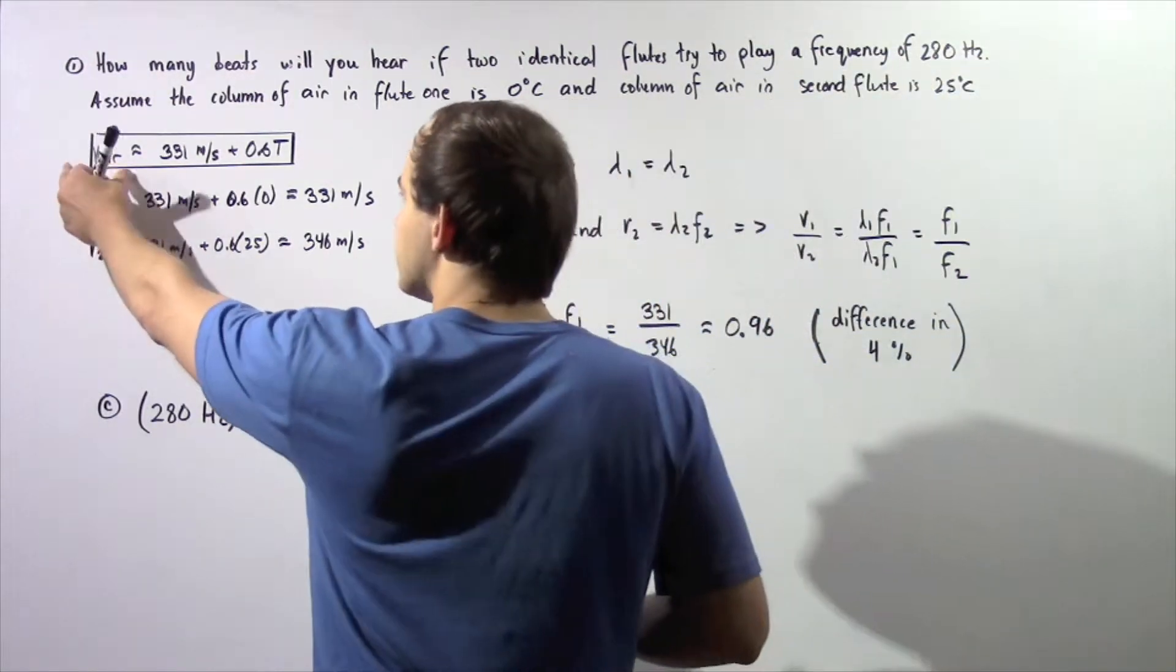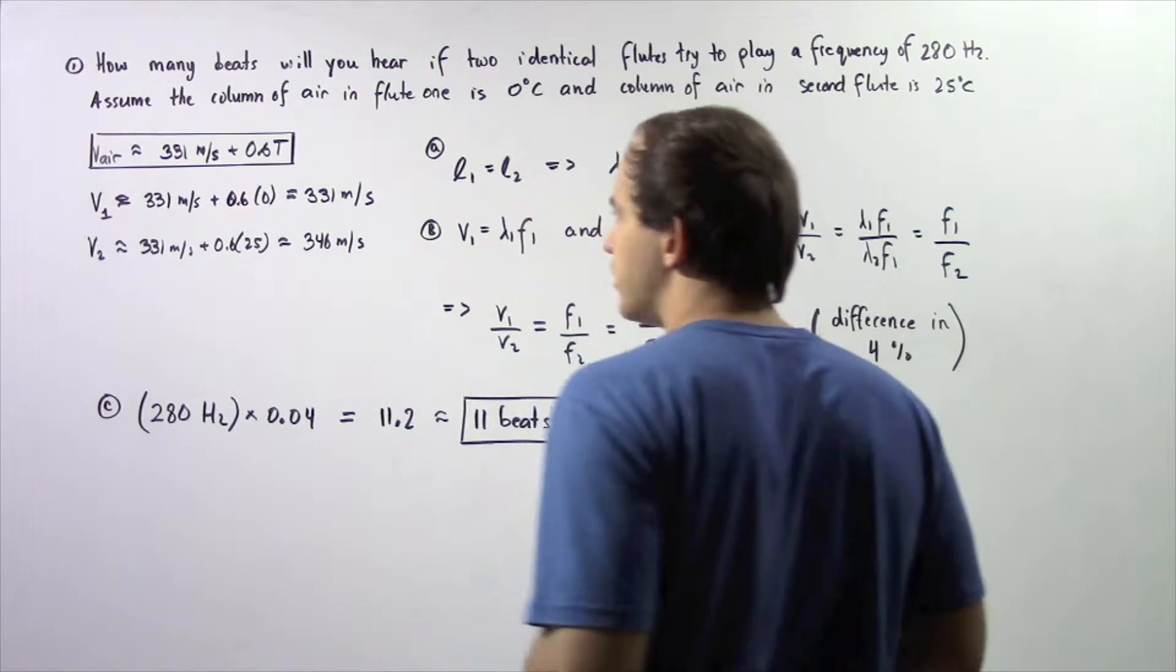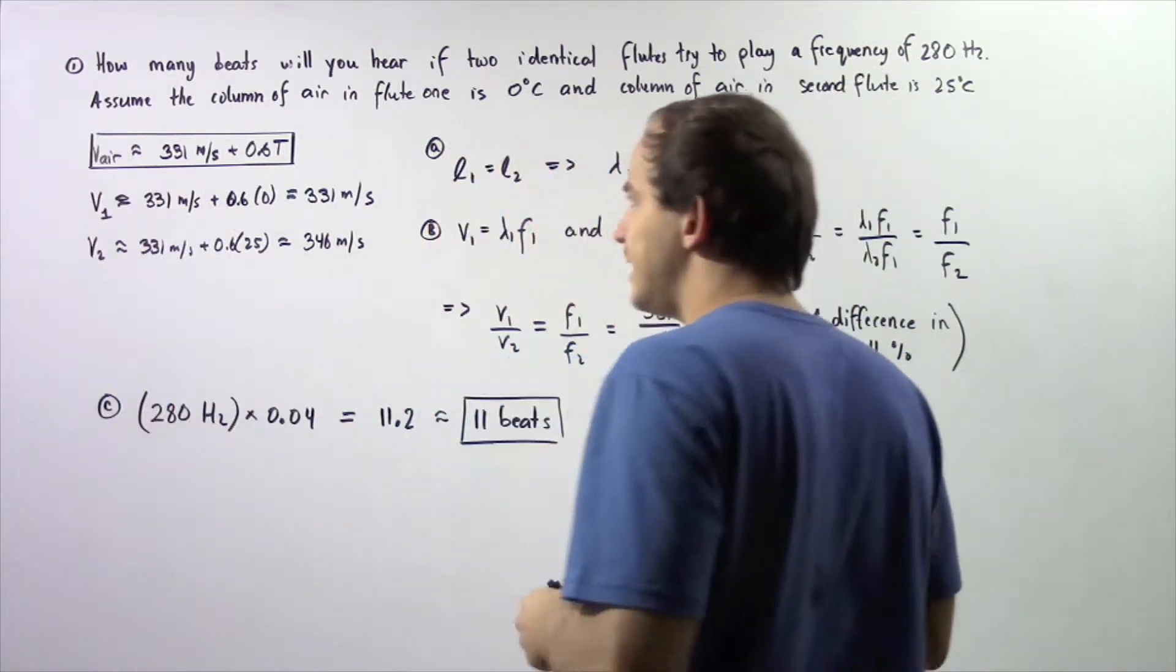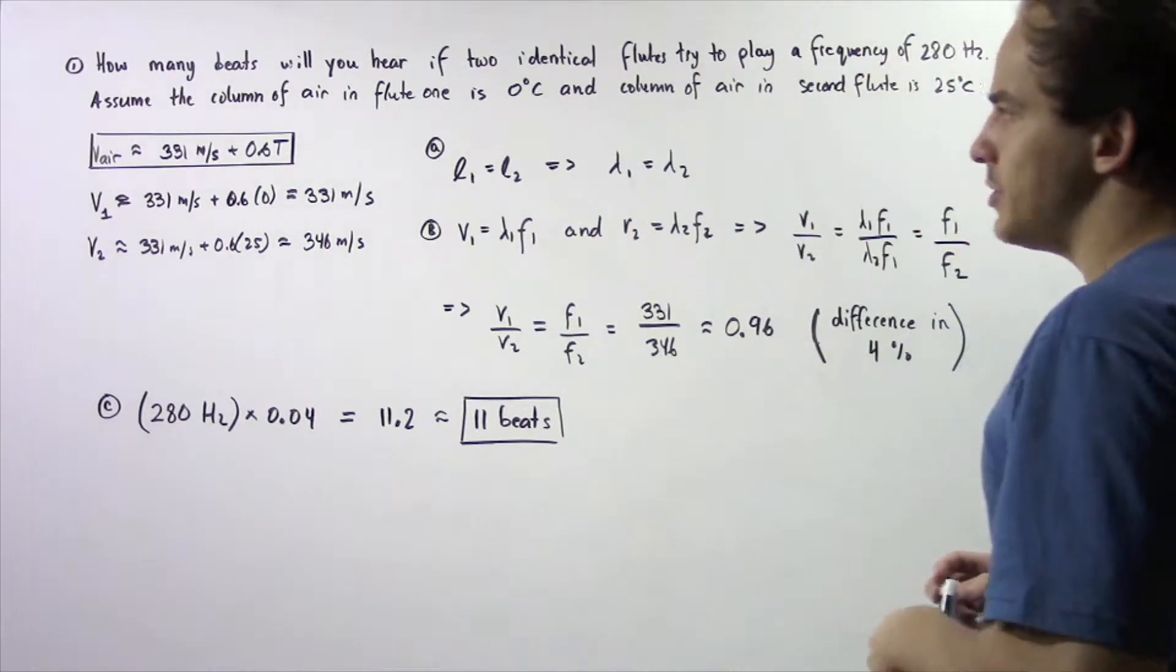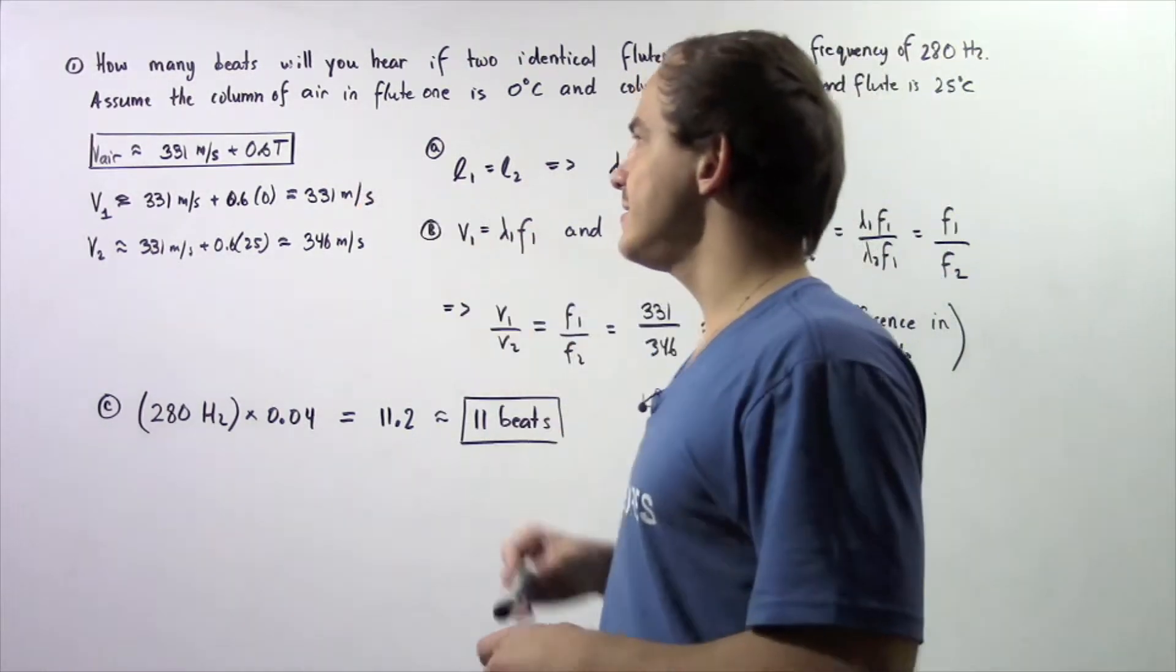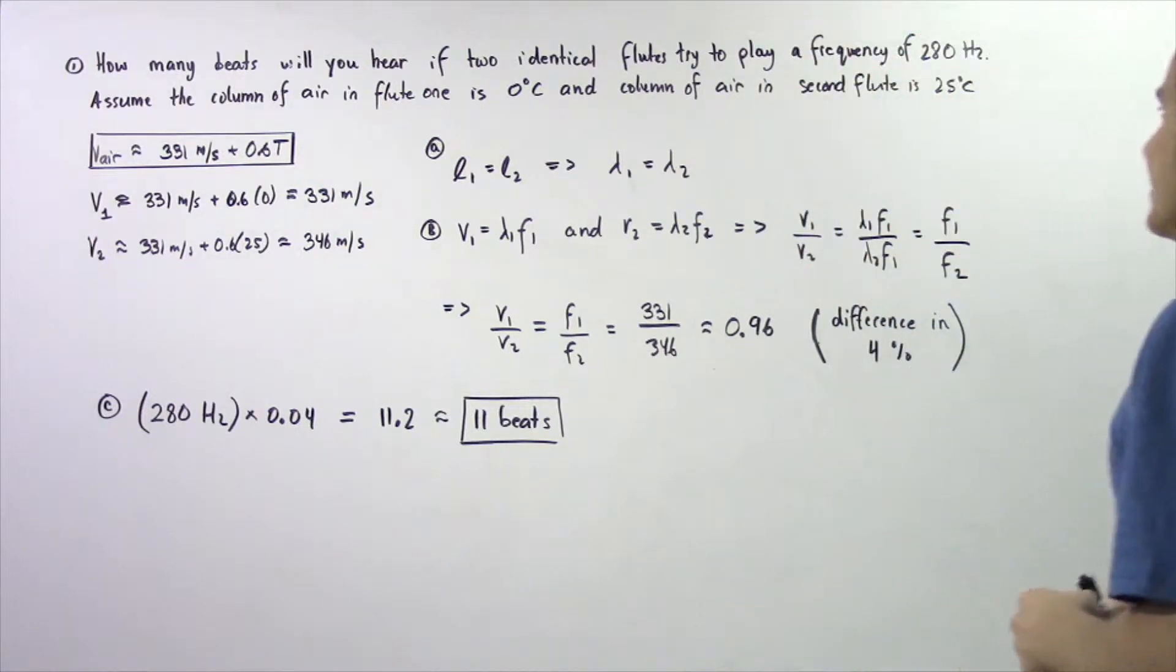So the equation that gives us the velocity is given by this formula. The velocity of air is approximately equal to 331 meters per second plus 0.6T where T is simply our temperature in Celsius.